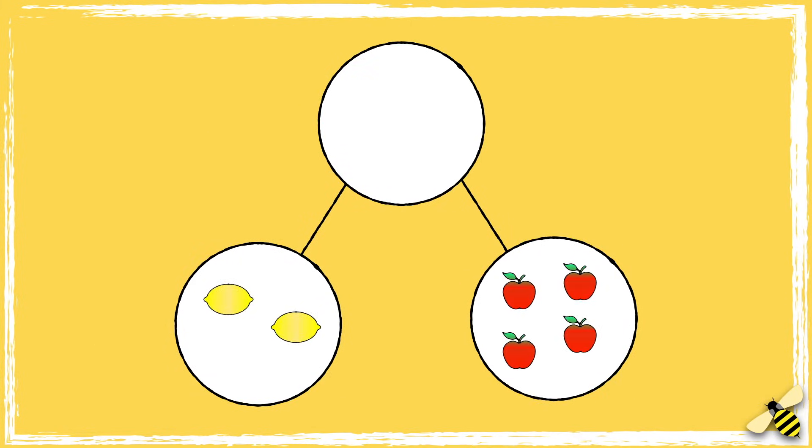Let's have one more go. How many lemons are there? One, two. How many apples are there? One, two, three, four.